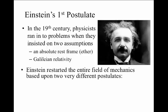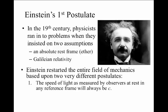Einstein's new theory restarted the entire field of mechanics based on two very different postulates. The first postulate is that the speed of light for all observers in any reference frame will always be c. One doesn't need to understand why it is so, or how it's measured relative to an absolute rest frame. It's just taken as a postulate that it will be c, no matter how it's measured in any reference frame.